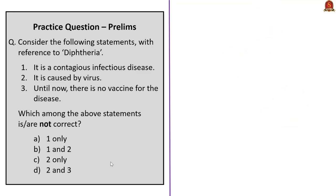This question is with reference to diphtheria. Three statements are given, asking which are NOT correct. The first statement: it is a contagious disease. Contagious means it is a communicable disease that can easily transmit from one person to another. Diphtheria is an infection of the nose and throat that can spread through direct contact or infected cough/sneeze droplets. Statement one is correct.